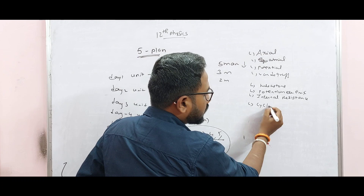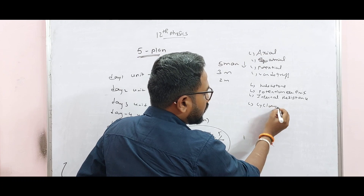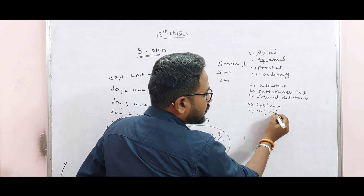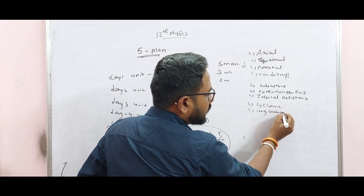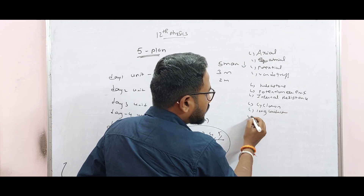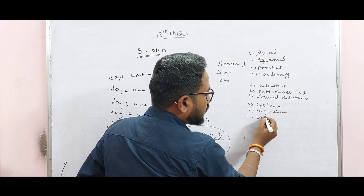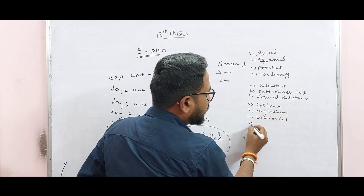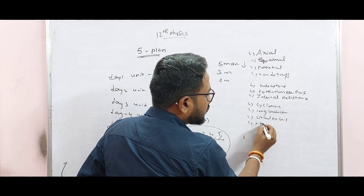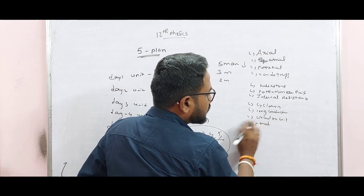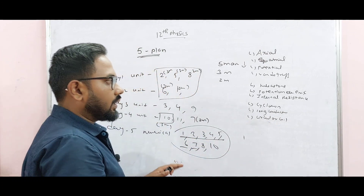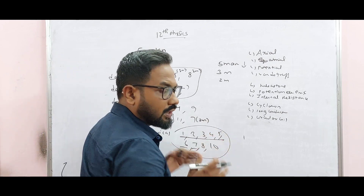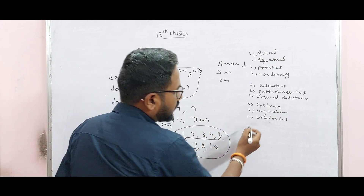Cyclotron. Long Conductor. Biot-Savart Law. Circular Coil. Parallel Conductor. So, this is the most important thing.